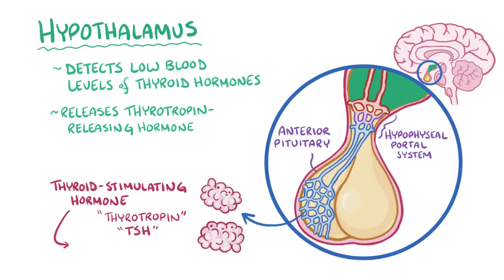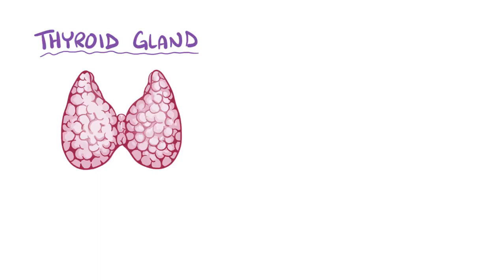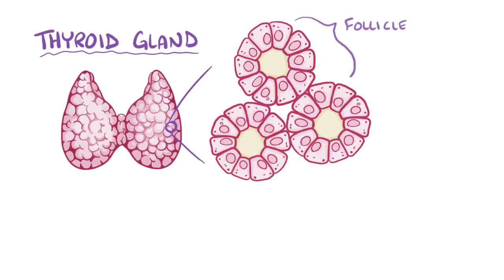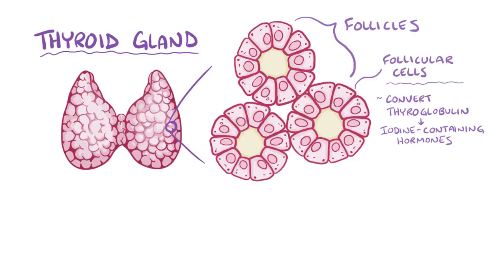TSH stimulates the thyroid gland, which is a gland in the neck that looks like two thumbs hooked together in the shape of a V. The thyroid gland is made up of thousands of follicles, which are small spheres lined with follicular cells. Follicular cells convert thyroglobulin, a protein found in follicles, into two iodine-containing hormones: triiodothyronine, or T3, and thyroxine, or T4.